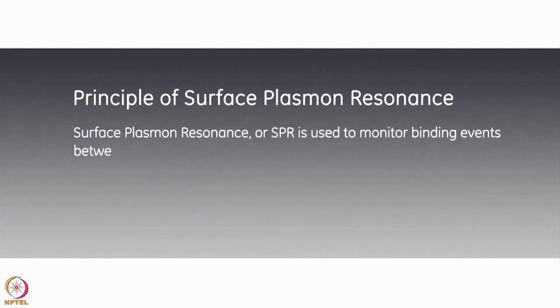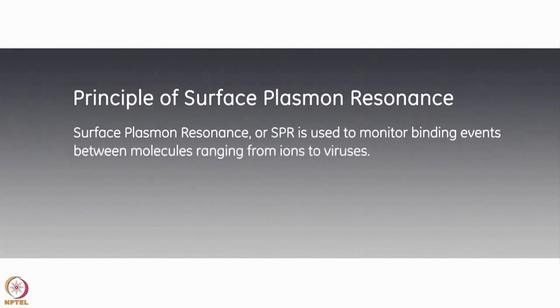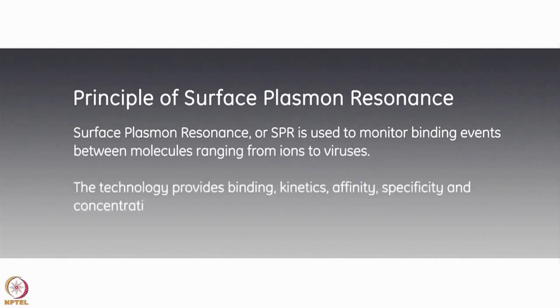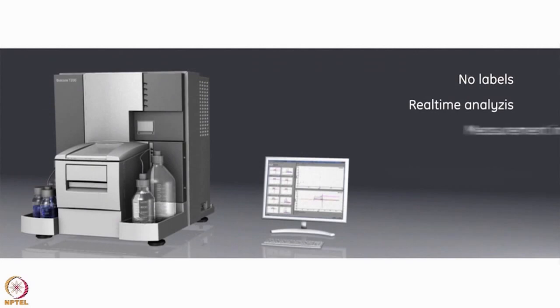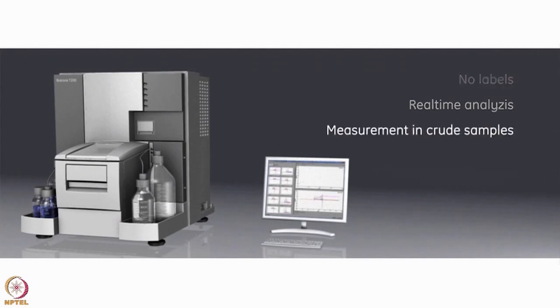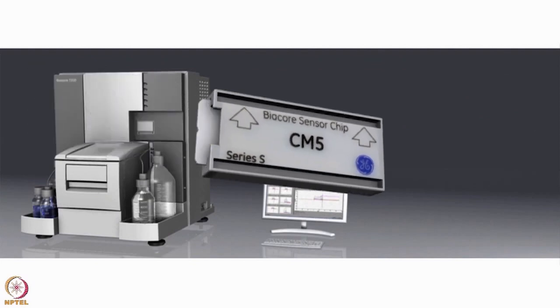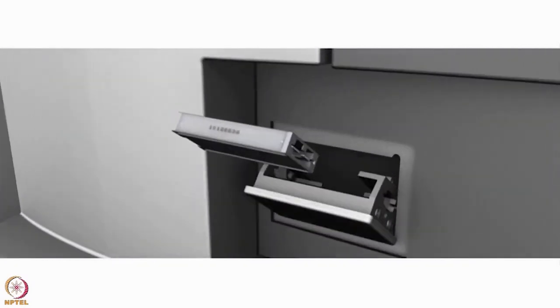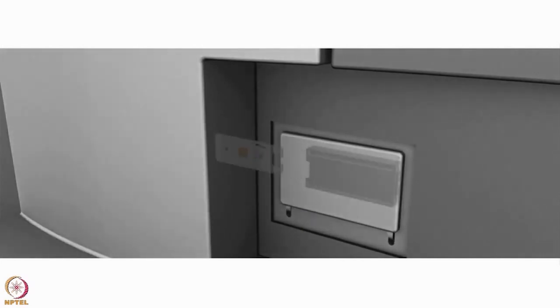Surface plasmon resonance, or SPR, is used to monitor binding events between molecules ranging from ions to viruses. This technique allows you to observe binding and measure kinetics, affinity, specificity, and concentration without any need for labels. Biacore T200 is designed for ease of use and exceptional sensitivity. In Biacore systems, molecular interactions are monitored on a removable sensor chip by the surface plasmon resonance detector.